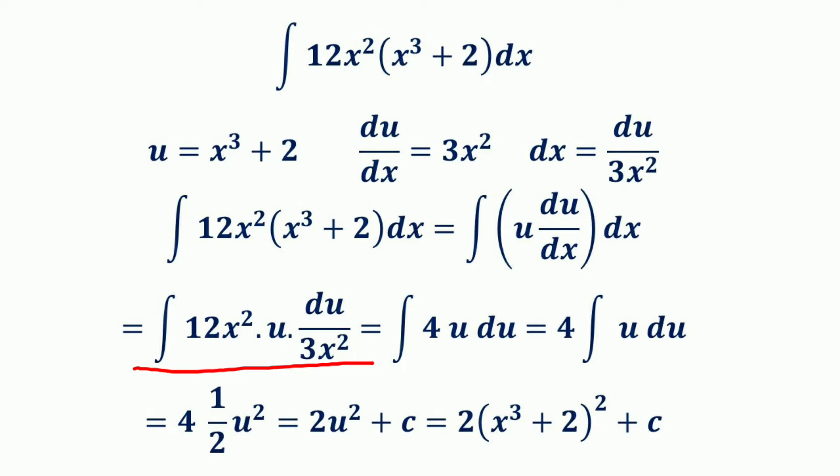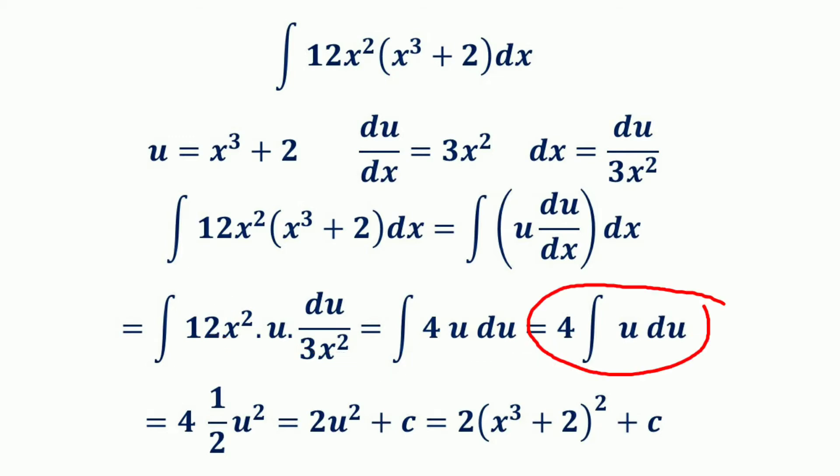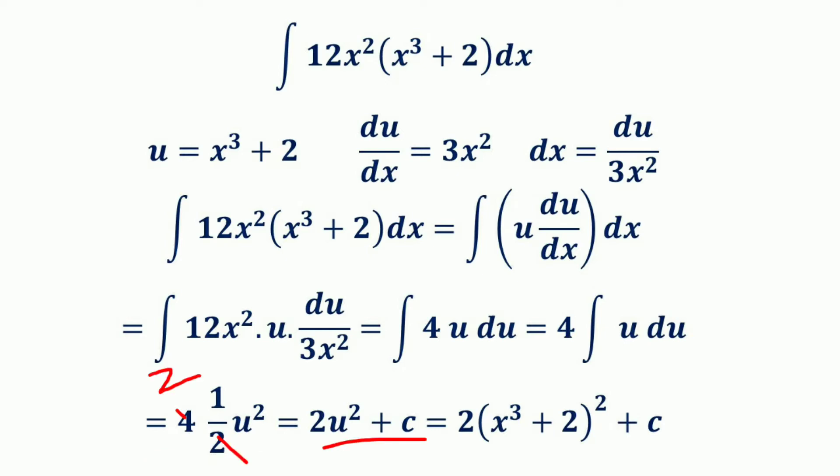After substitution, the integral becomes the integral of 12x² · u · du/(3x²). The 12x² and 3x² cancel, giving a factor of 4. So it becomes the integral of 4u du, which equals 4 taken outside the integral, times the integral of u du, which equals 4 · (1/2)u², and the 4 and 2 cancel to give 2u² + c.